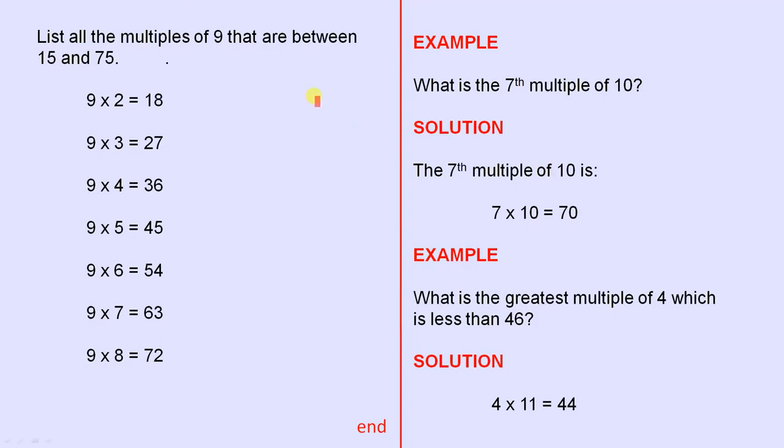List all the multiples of 9 that are between 15 and 75. So the multiples have to be greater than 15 and less than 75. 9 times 2 is 18. 9 times 3 is 27.